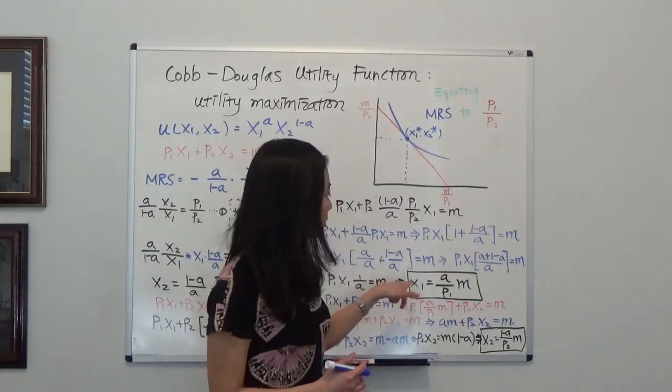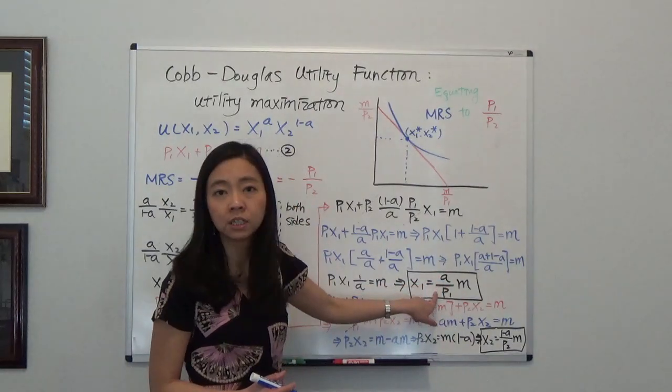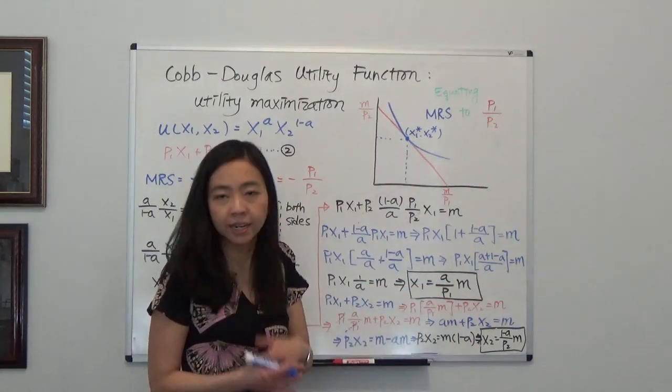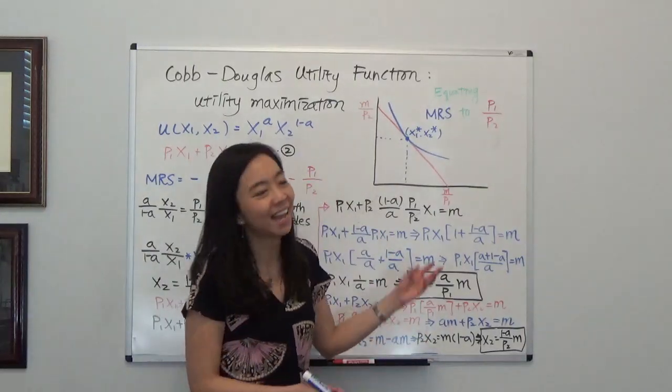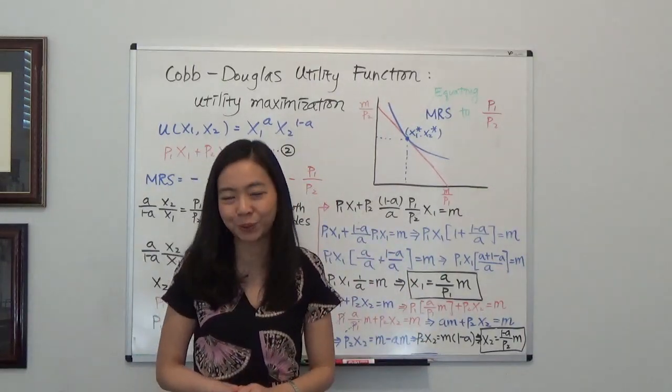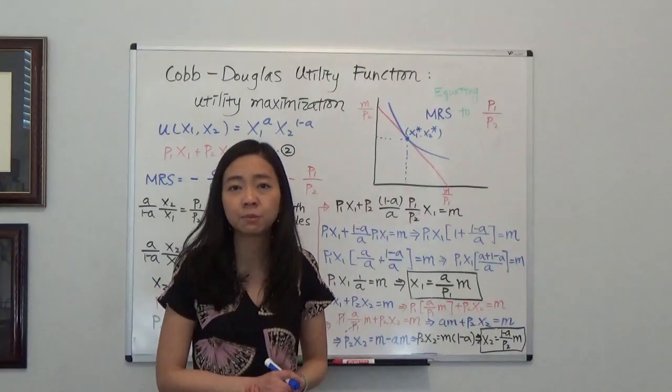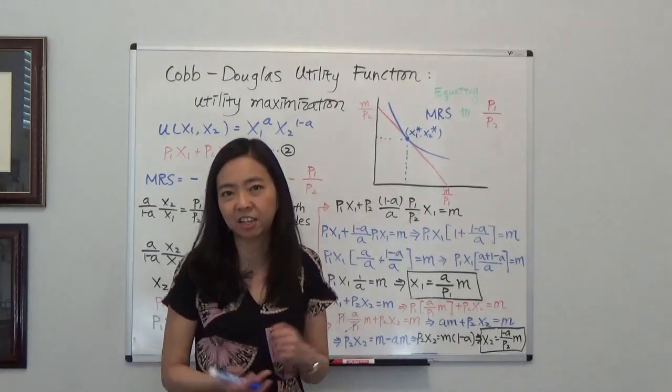But if you use m, if you use p1, then whenever your prices change or your budget has changed, you just need to plug in a new number and then you get optimal consumption bundle. And that's a reason why economists like to use parameters instead of numbers.